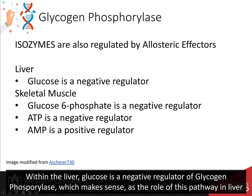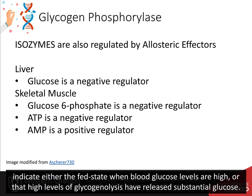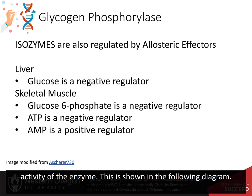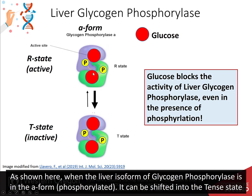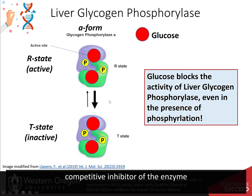Within the liver, glucose is a negative regulator of glycogen phosphorylase, which makes sense, as the role of this pathway in liver tissue is to promote the release of glucose into the bloodstream. The presence of free glucose in the cytoplasm of the liver would indicate either the fed state when blood glucose levels are high, or that high levels of glycogenolysis have released substantial glucose. Within liver tissue, the presence of free glucose will cause the A form of glycogen phosphorylase to shift to the tense state, reducing activity. When the liver isoform is in the A form, it can shift into the tense state in the presence of high levels of free glucose, blocking the glycogen binding site and essentially serving as a competitive inhibitor.